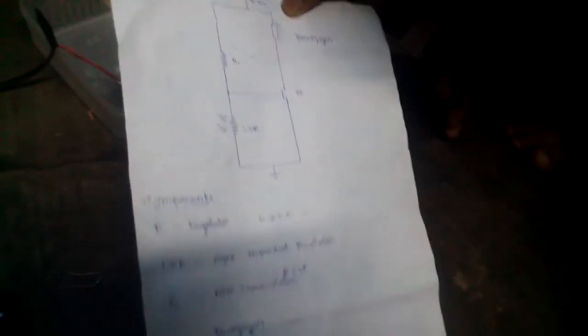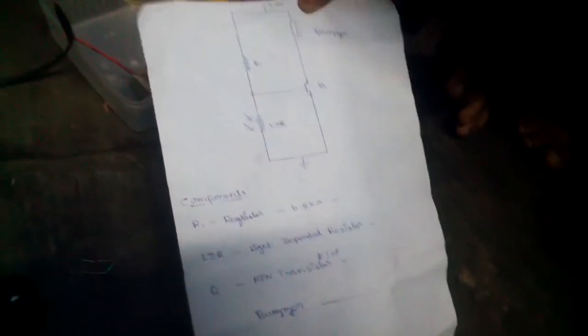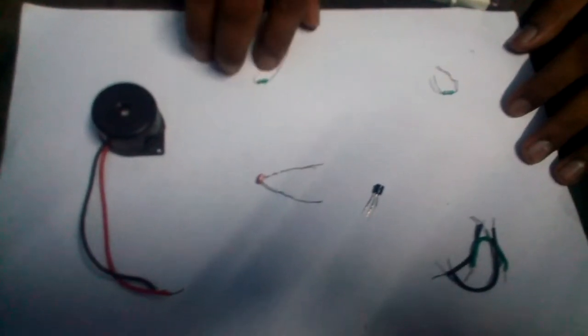Let's see the circuit. We can see it here. This is a buzzer. This is a 100 Ohm resistor. This is the circuit.